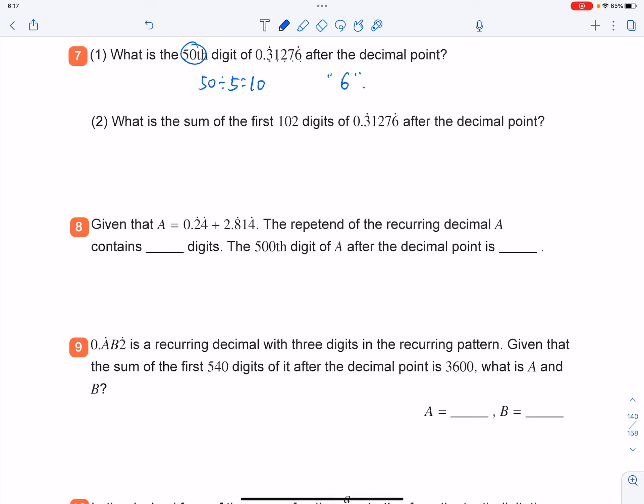And then what is the sum of the first 102 digits of this number after the decimal point? So you should use 102 divided by 5 which equals 20 with remainder 2.